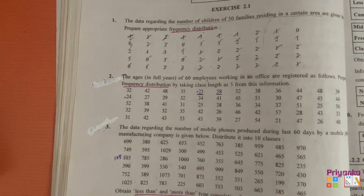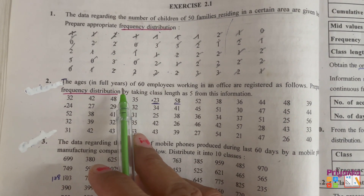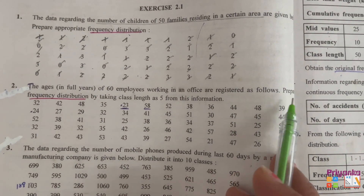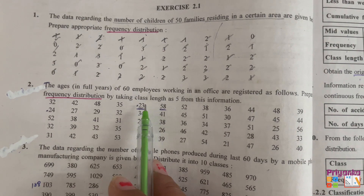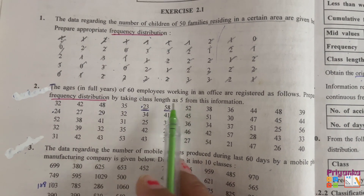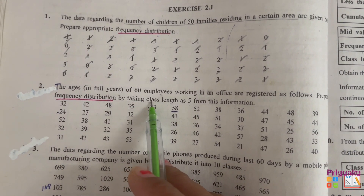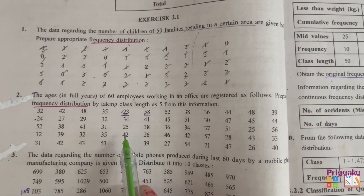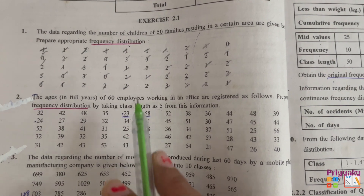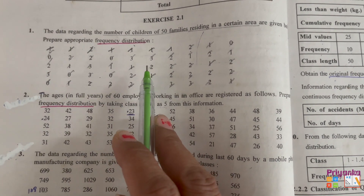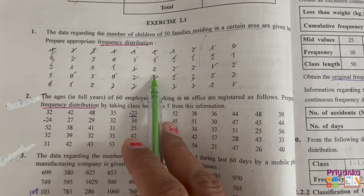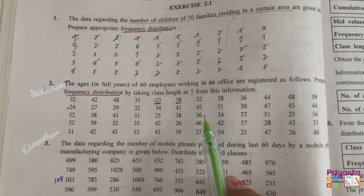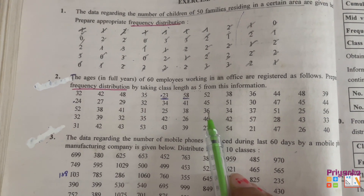Moving to the next question: the age in full years of 60 employees working in an office are given. Prepare a frequency distribution with a class length of 5. Note that compared to the first question, the values here are larger. When values are small, we use discrete frequency distribution; when values increase, we prepare a continuous frequency distribution.